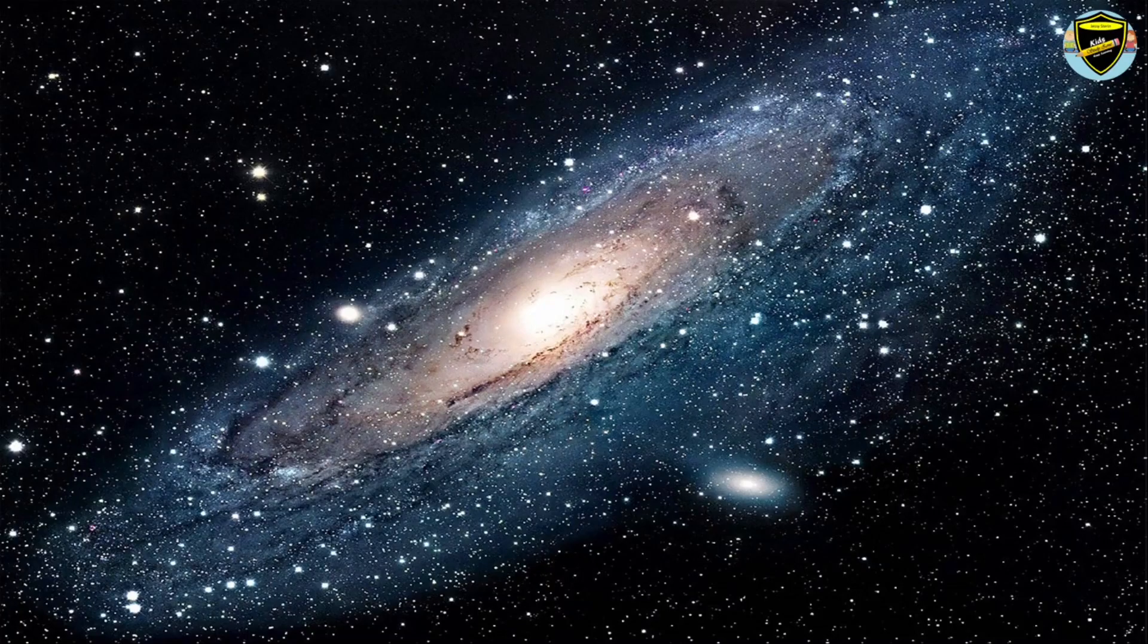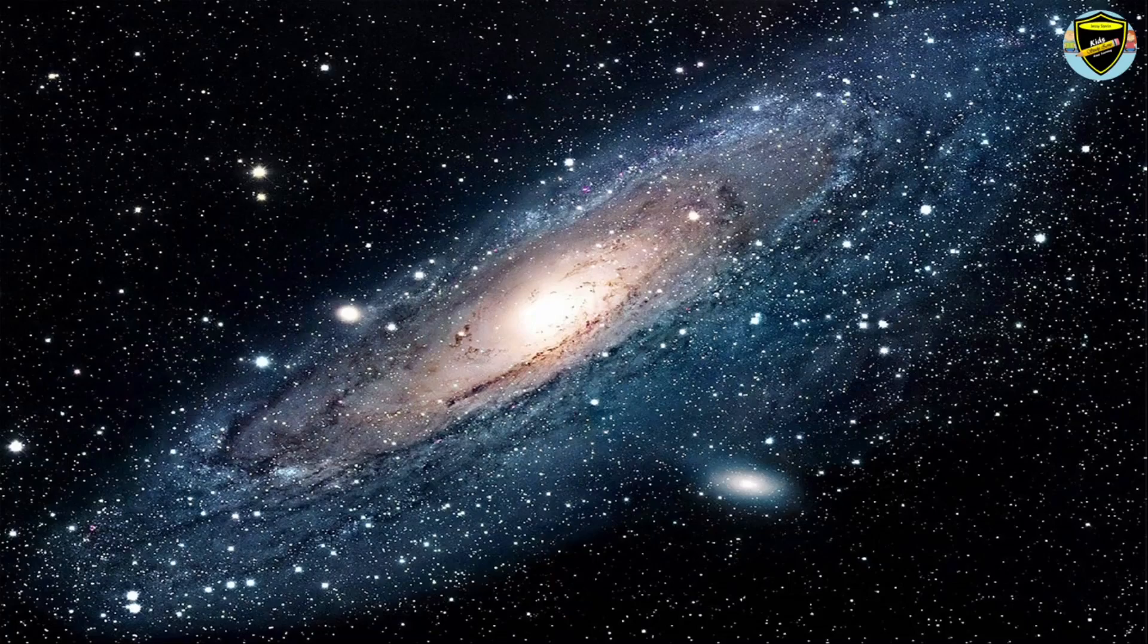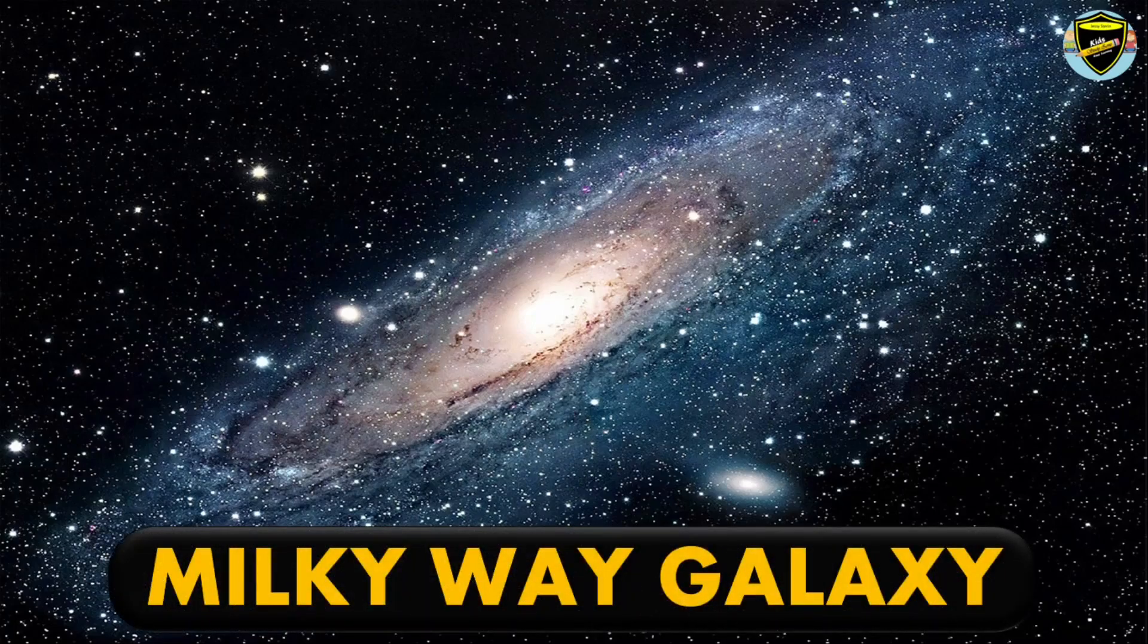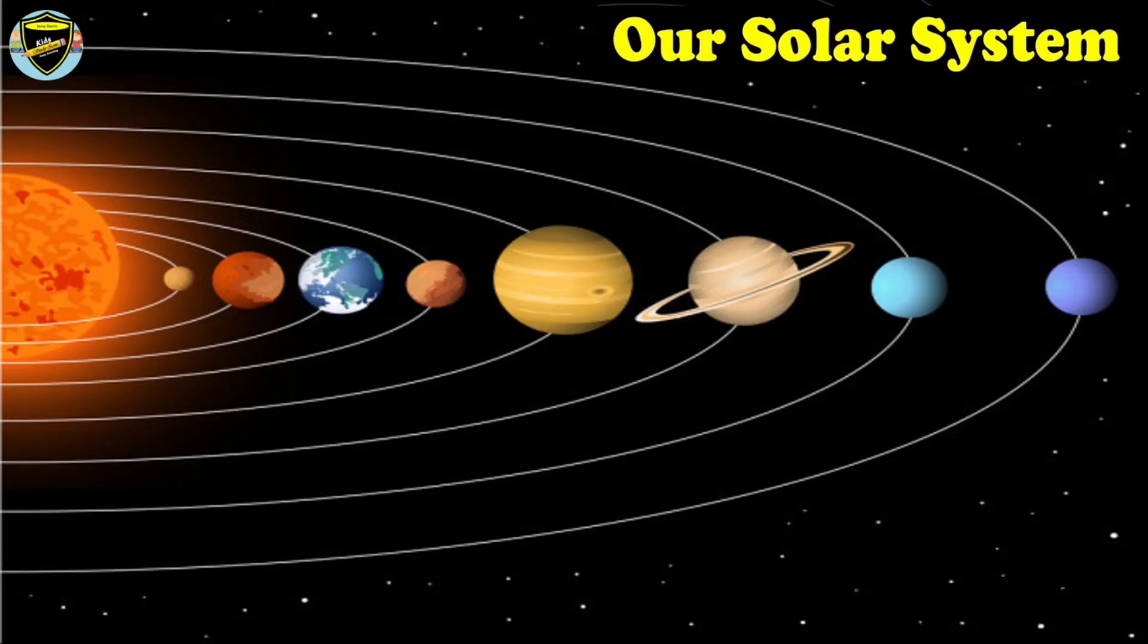There are eight planets in our solar system, and they revolve around the Sun in a definite orbit. Our solar system is one of many solar systems in our galaxy, and the name of our galaxy is Milky Way Galaxy. In this video, we are going to learn about our solar system and the names of eight planets that make our solar system.